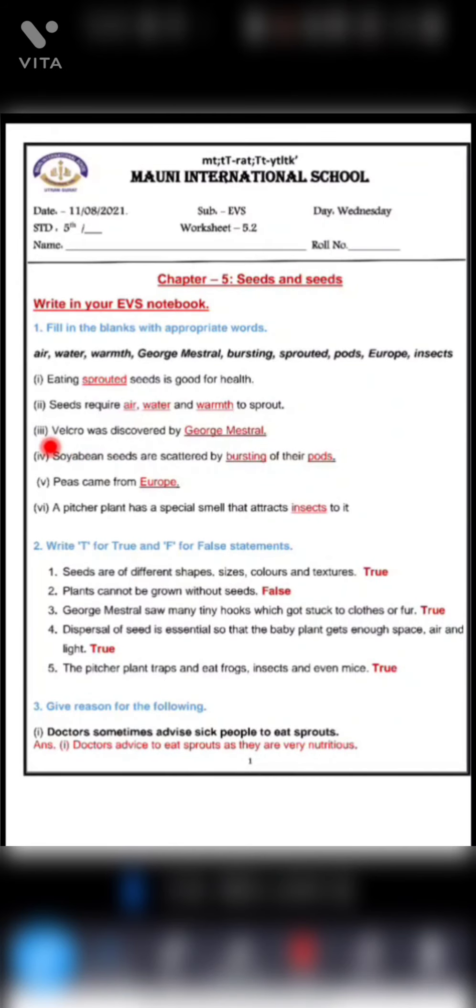Seeds need air, water and warmth to grow. Third one, velcro was discovered by George Meserel. The name of the scientist is George Meserel. Fourth one, soya bean seeds are scattered by dash of their pods.